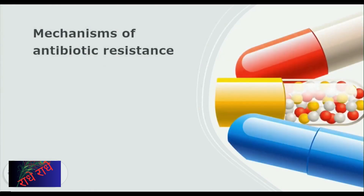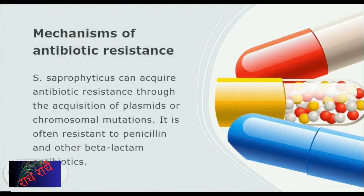S. saprophyticus can gain resistance to antibiotics through the acquisition of plasmids or chromosomal mutations, notably making it often resistant to penicillin and other beta-lactam antibiotics. To combat this, proper steps must be taken, such as administering the appropriate antibiotics and taking preventive measures to reduce the level of antibiotic resistance.